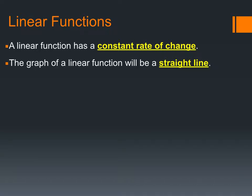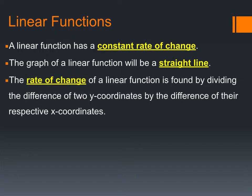The rate of change of a linear function is found by taking any two ordered pairs, which are solutions to the linear function, dividing the difference of the two y coordinates by the difference of their respective x coordinates.